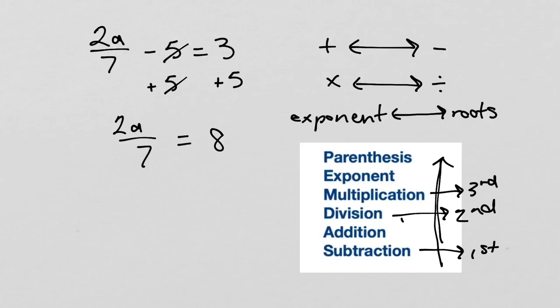We know we will do our division by 7. We get rid of the divided by 7 by performing the opposite operation on it. We will multiply both sides by 7. The 7 will cancel out. 8 times 7 is 56. So, now we have 2a equals 56.